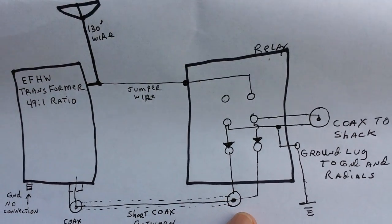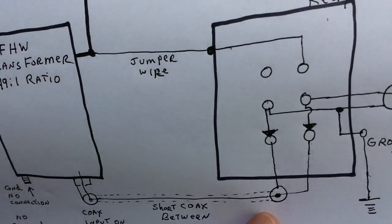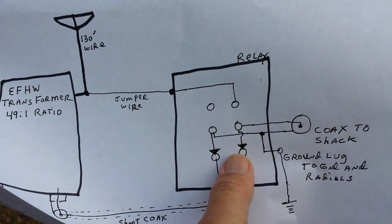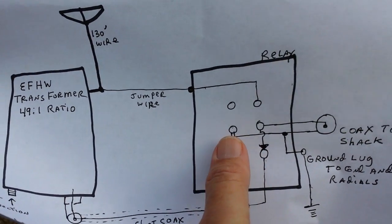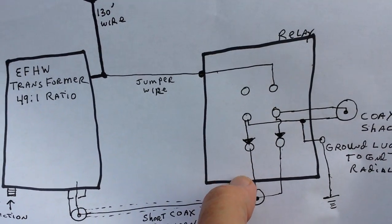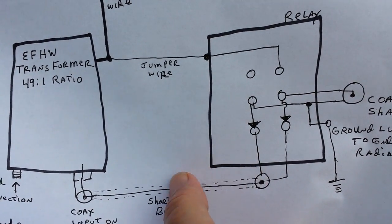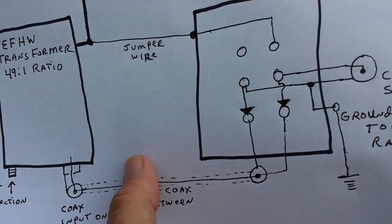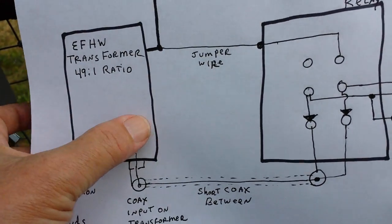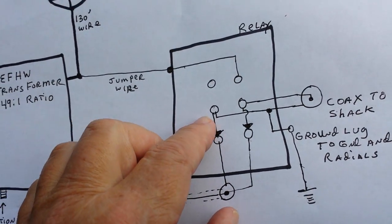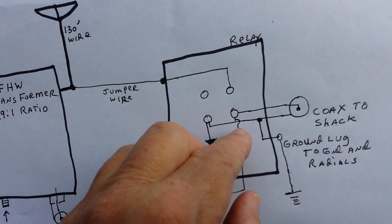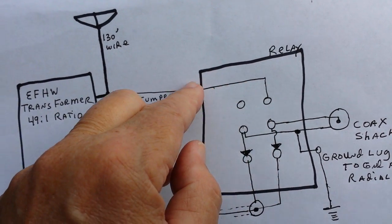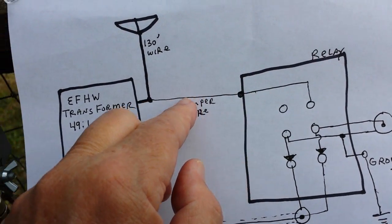Those two switch contacts flop up and that disconnects the ground here so this just floats. And then it also sends the coax's center conductor up to the antenna output here on our relay box. Let's take a look here at the relay box.